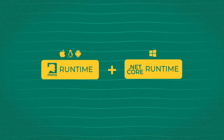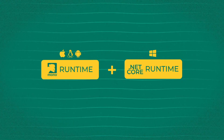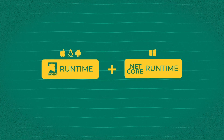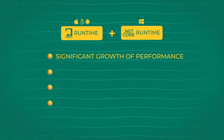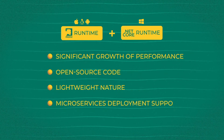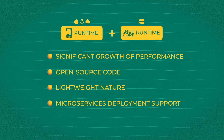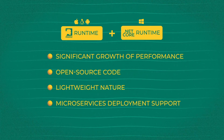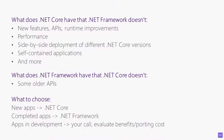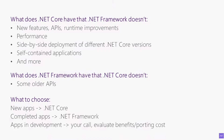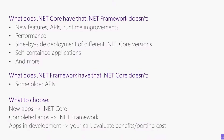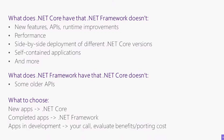Coupled with its improved .NET Core runtime for Windows, the framework basically allows you to write one code base and run it anywhere you want. Among other improvements — like significant growth of framework performance, open source code, lightweight nature, and support for microservice deployments — .NET Core seemed to be better than its predecessor in many ways. But it wasn't meant to replace the original framework yet, because there were already thousands of applications built with it. That's why both are developed and maintained in parallel, which is quite complicated.